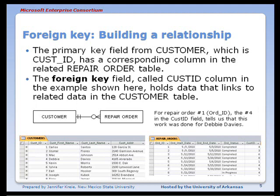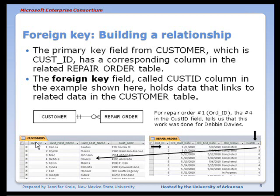The foreign key field, called the Cust ID column in the example shown here, holds data that links to the related data in the customer table. If we look at repair order number one — the very first row — and we're looking at ORT ID, repair order ID 1, we see that repair order was done for customer ID 4. We can then take that number, go look at the corresponding primary key column, find the 4, and see who the customer is.